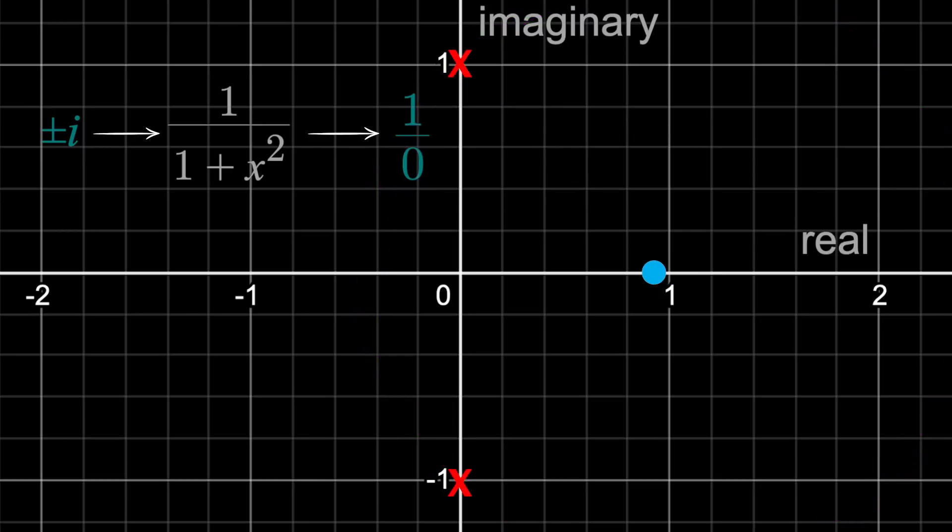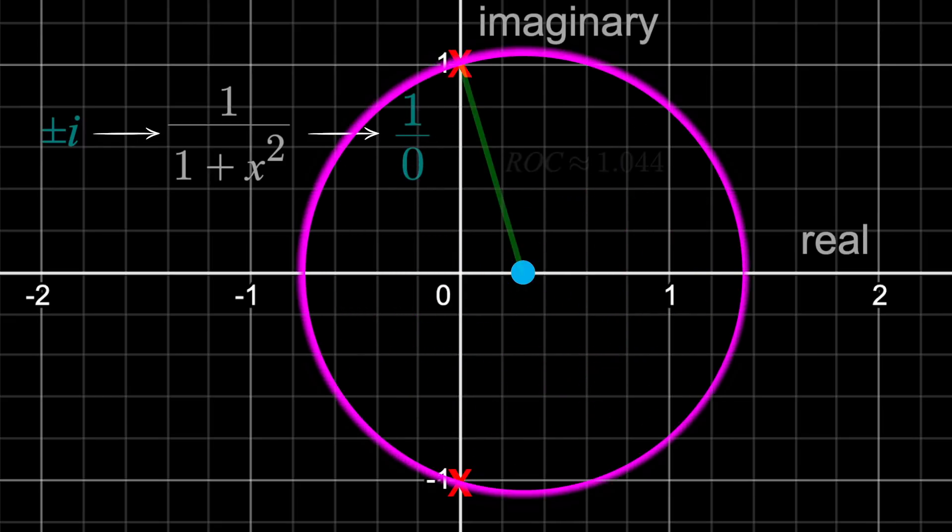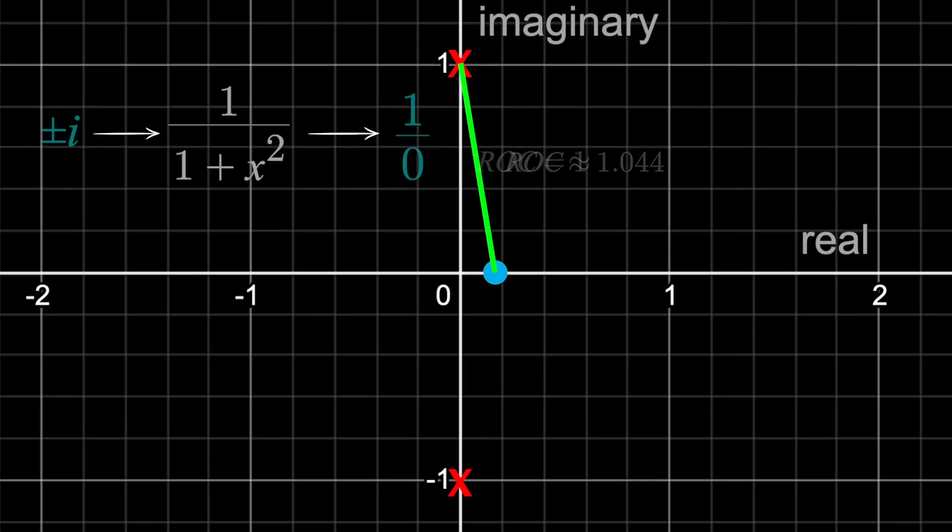And that's why at x equals 0.3, the radius of convergence for the Taylor series was about 1.044. And at x equals 0, the radius of convergence was 1.